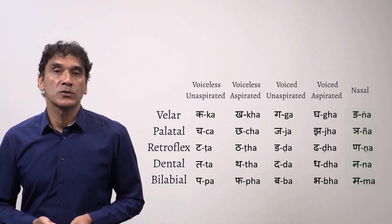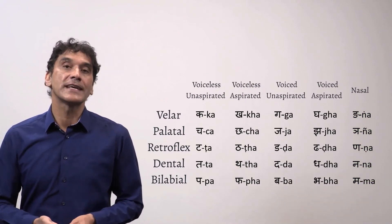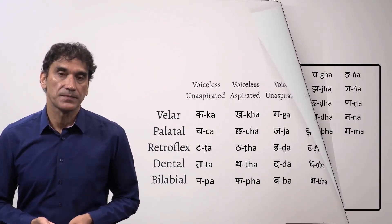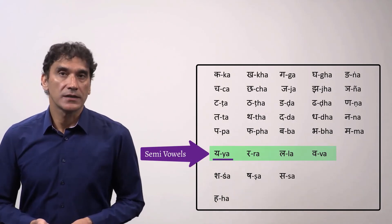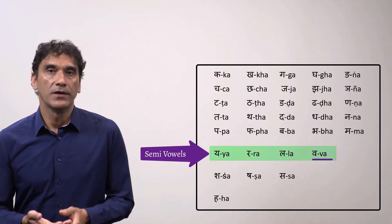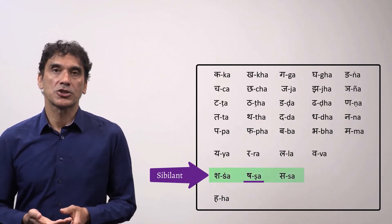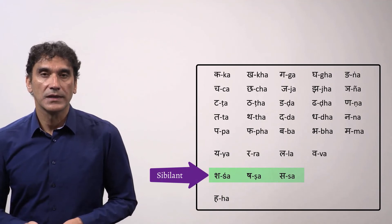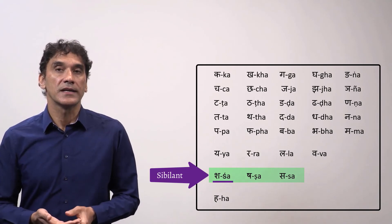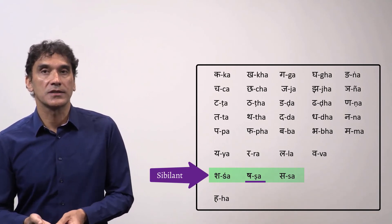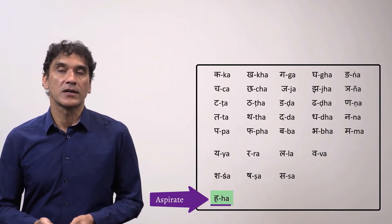So you can see that every consonant has its specific place in the table based on the place of articulation, voicing, and aspiration. The next set of consonants are semi-vowels: ya, ra, la, va. The next three consonants are sibilants: sh, sh, sa. Sibilant sounds are made by directing the stream of air to produce a hissing sound. The final consonant is the aspirate H sound.